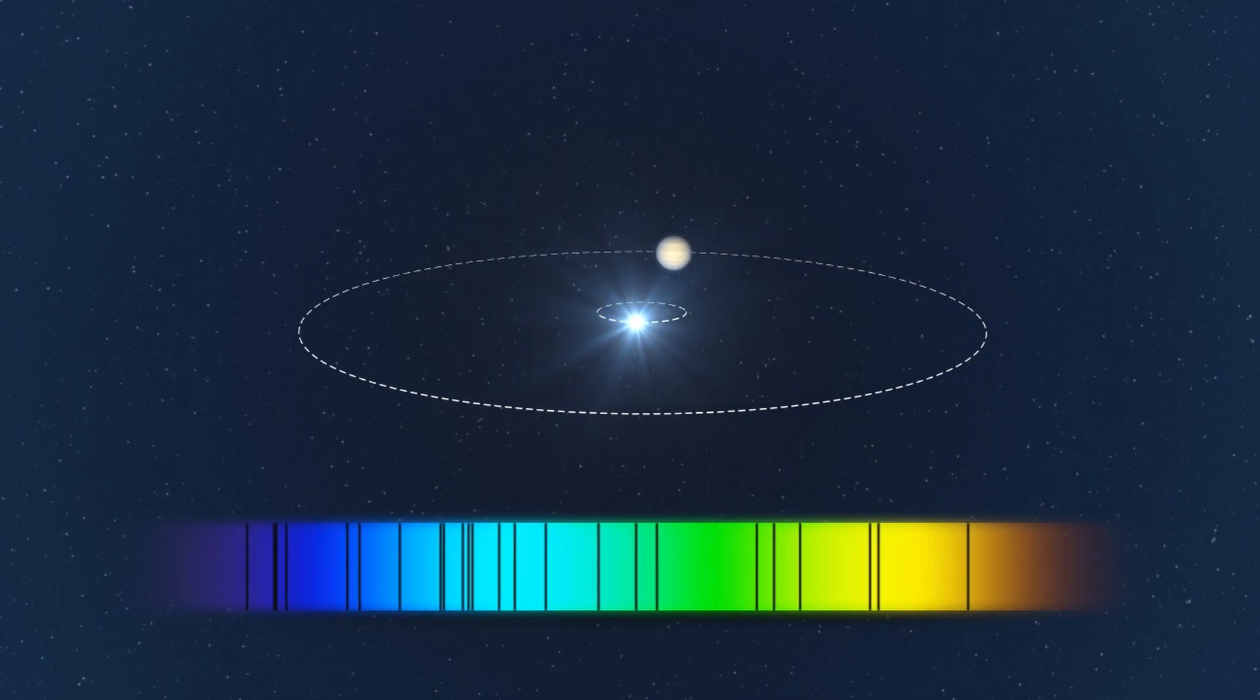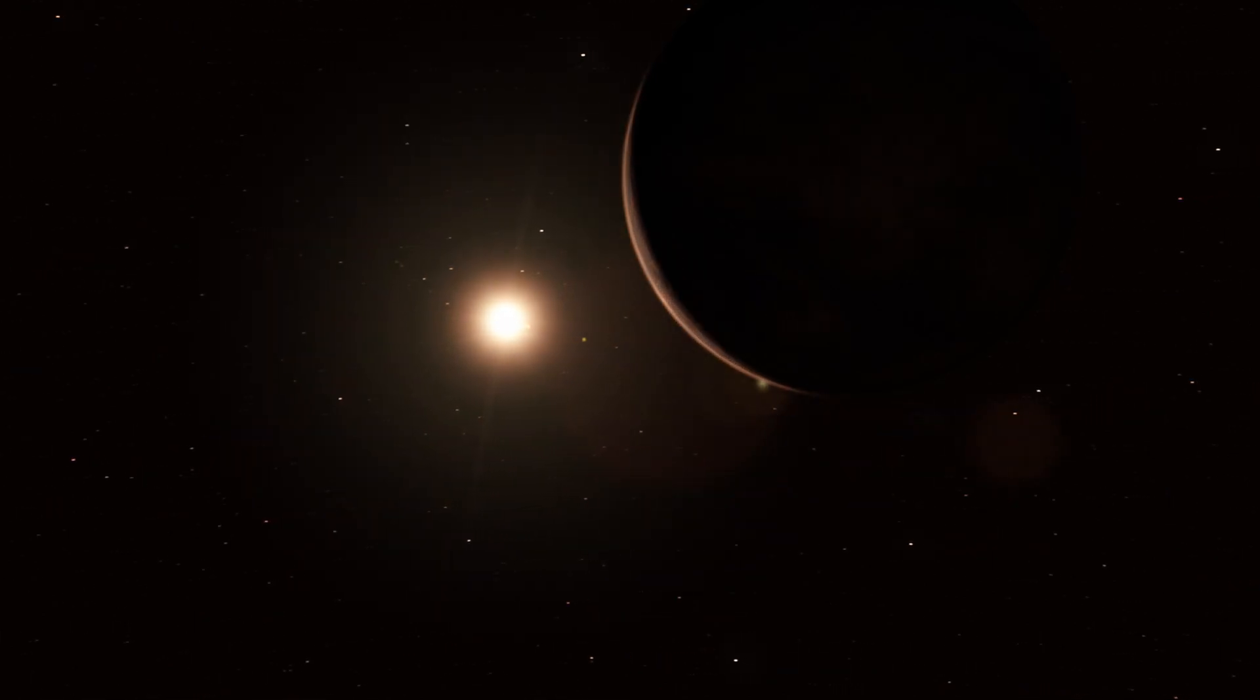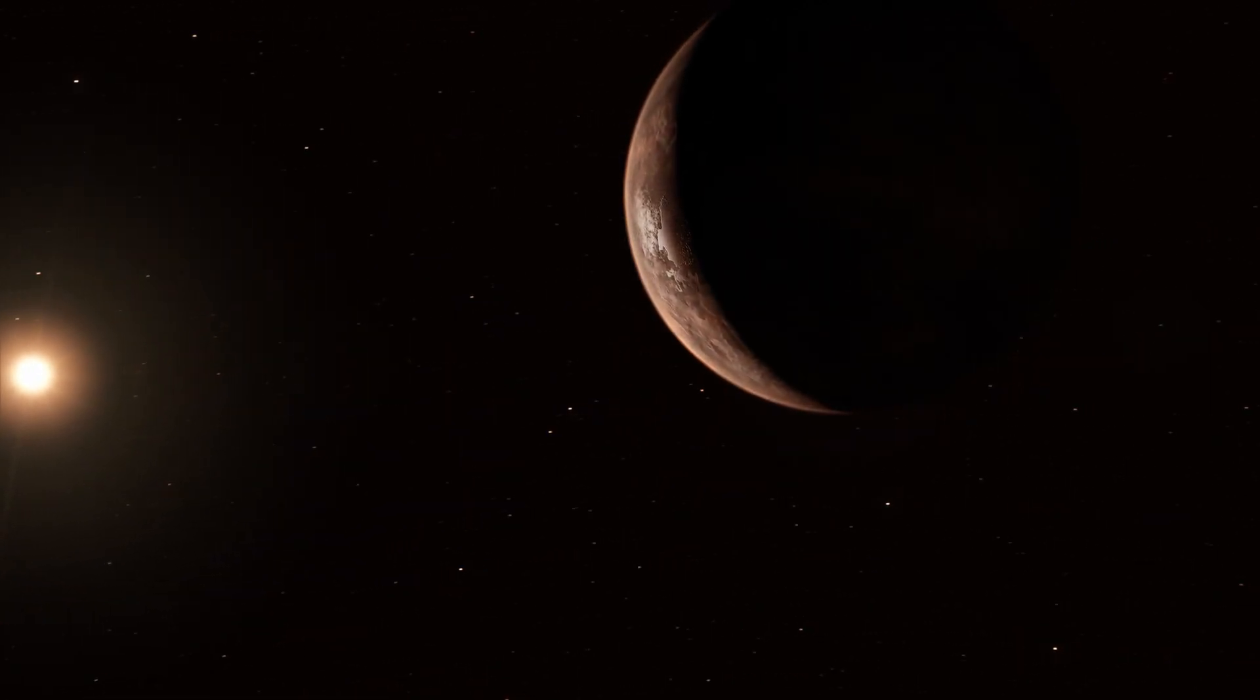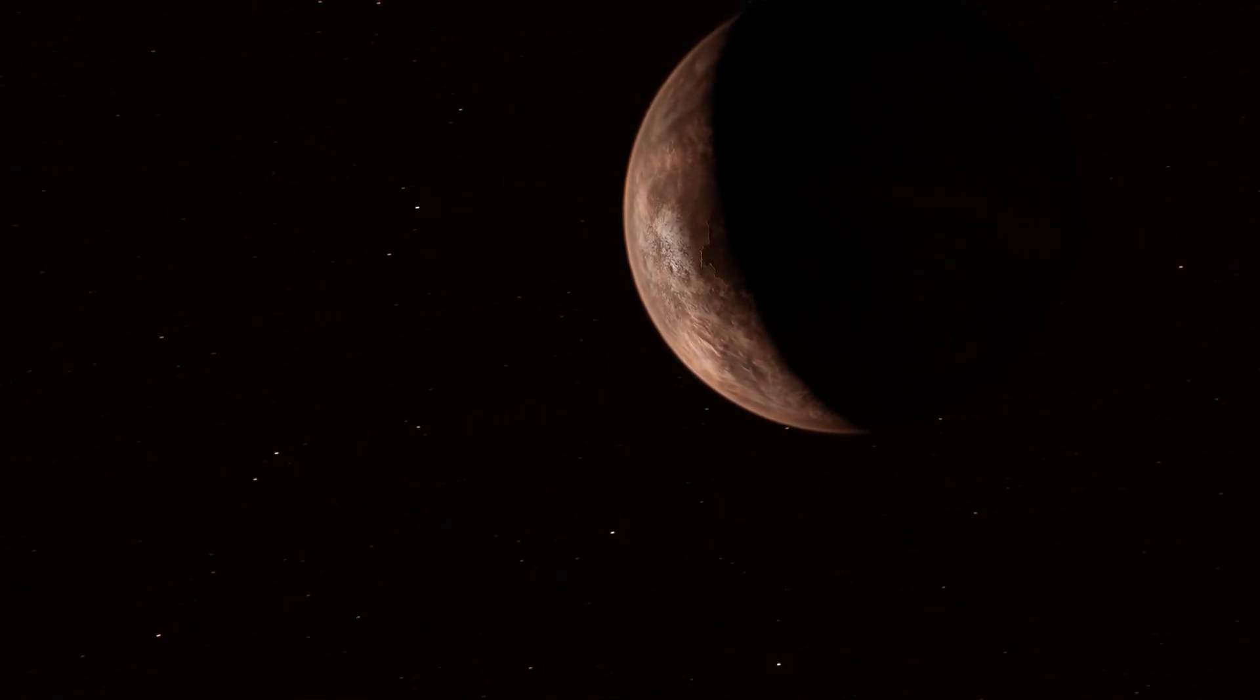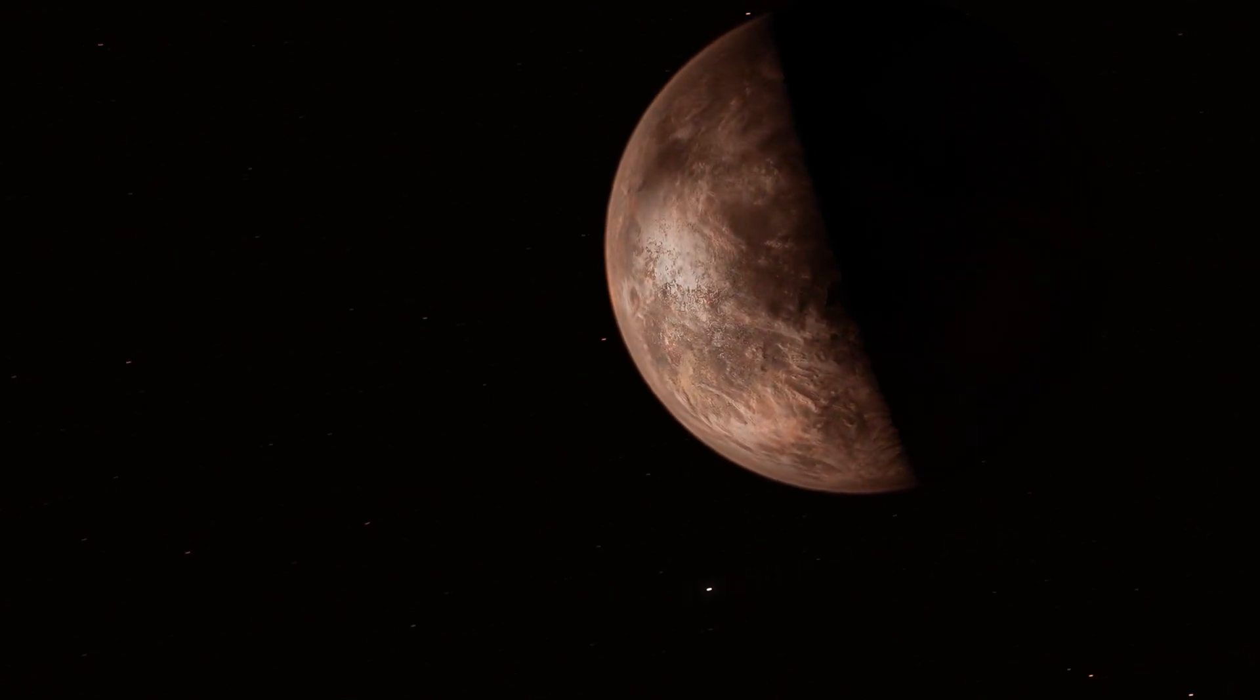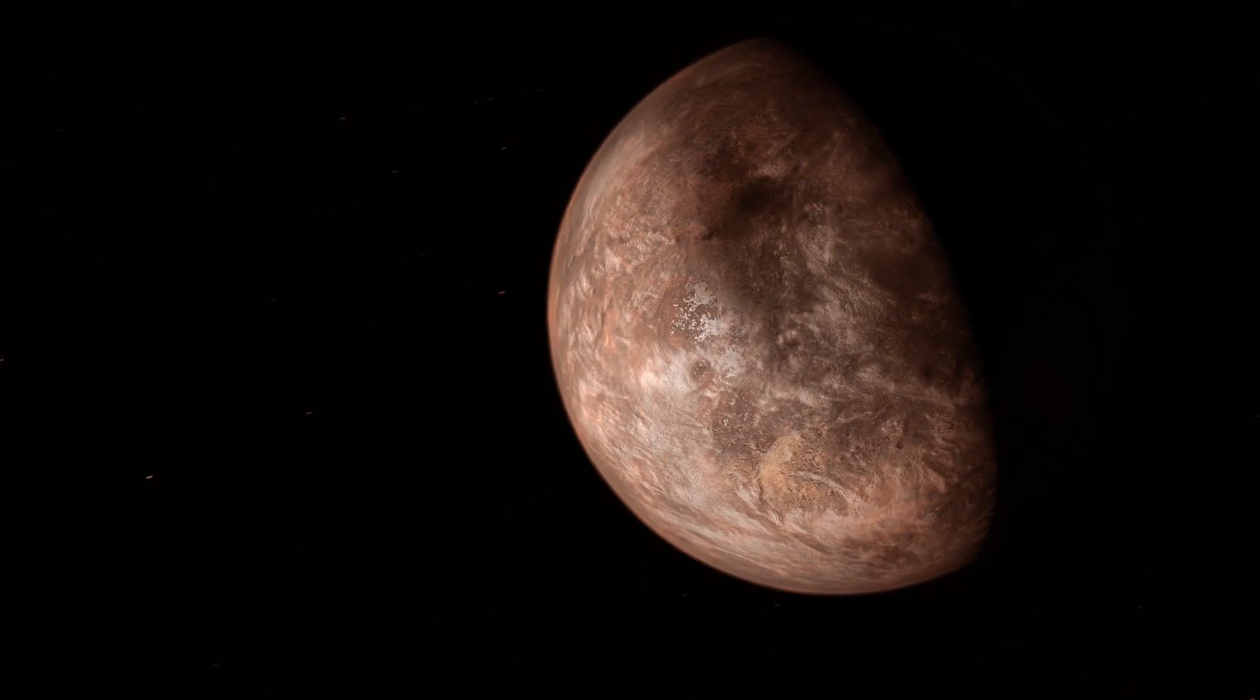So what's in orbit around Barnard's star? The observations from HARPS and seven other instruments spanning 20 years indicate that there is a rocky, super-Earth-sized planet circling the fourth-closest star to us. Called unimaginatively Barnard's star b, it has a mass at least 3.2 times that of the Earth, and it orbits its host star once every 233 days.